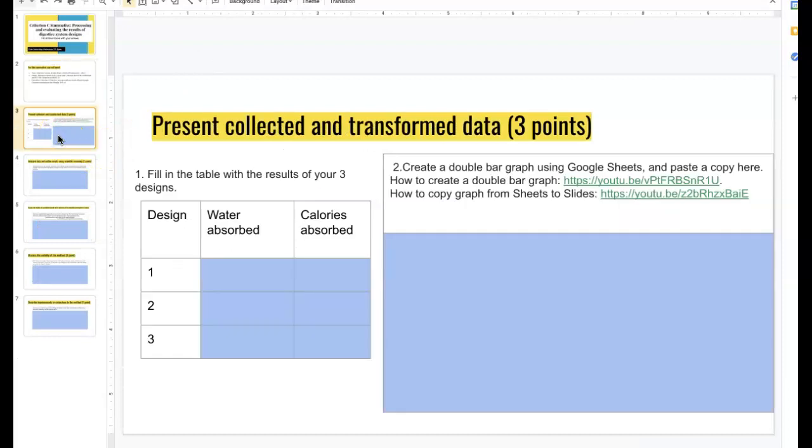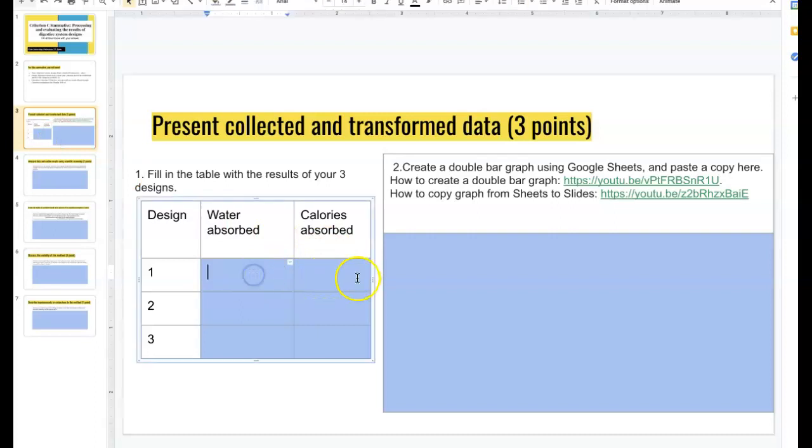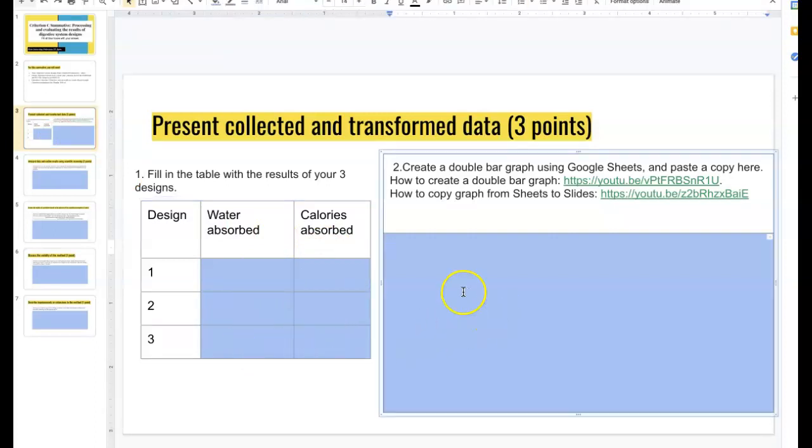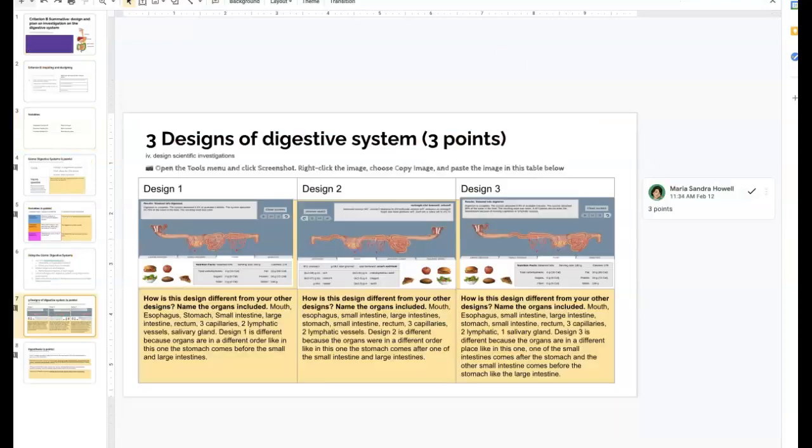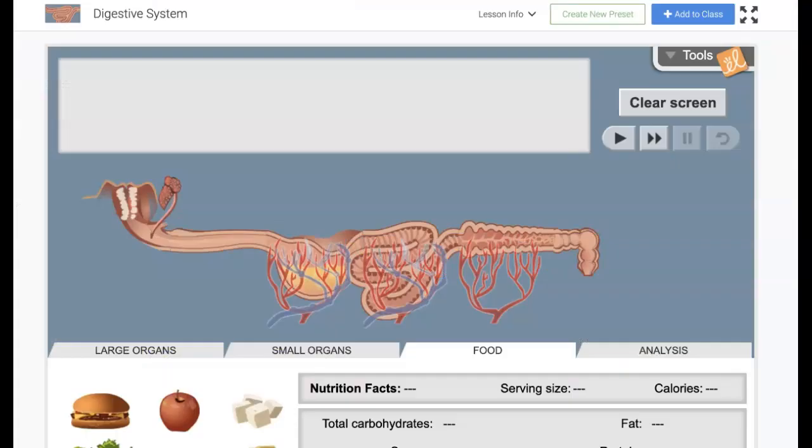It asks here to present collected and transformed data. You're going to put in your numbers here and then copy paste your double bar graph on this big blue box for slide 3. There are YouTube videos linked here so you can see how to create your double bar graph. If you've already done your Criterion B Summative, that's good. If not, you really need to do your slide 7 so that you can run the Gizmo and gather results.